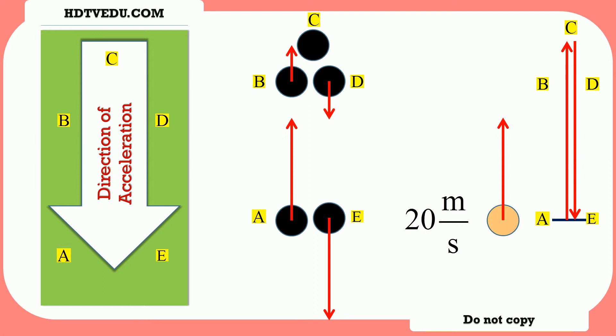It is negative 9.8 meters per second per second, but for you and for me, because we are learning the material, we'll keep it at negative 10 meters per second per second. We assume that the acceleration is uniform, meaning we are very close to the surface of the Earth. The object is kicked vertically up at 20 meters per second.